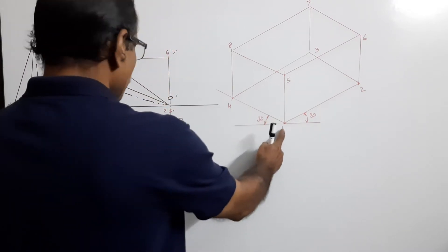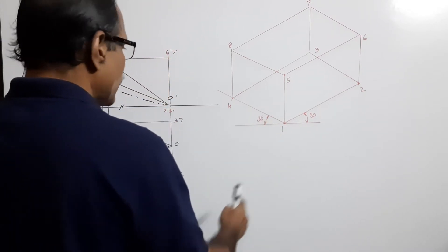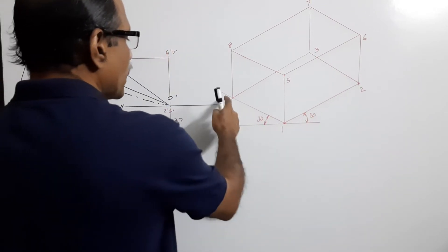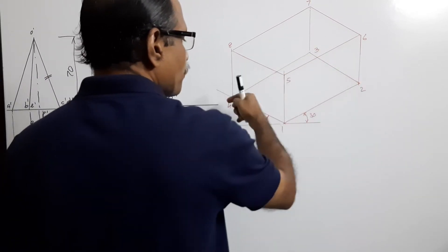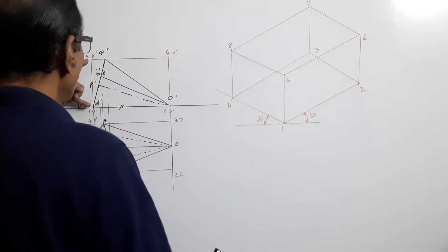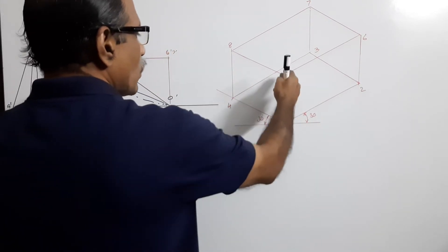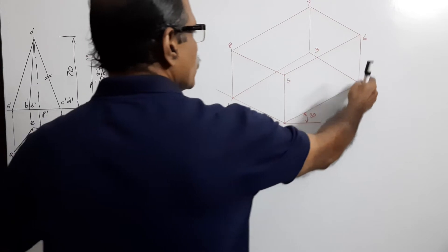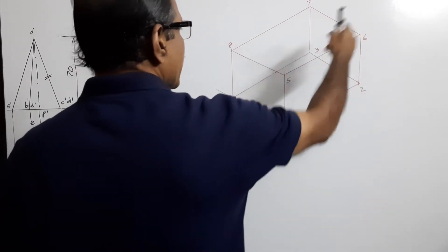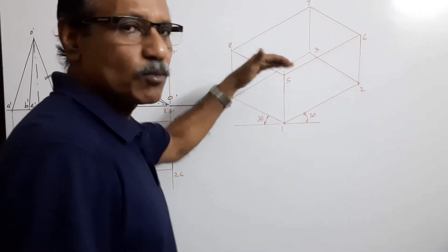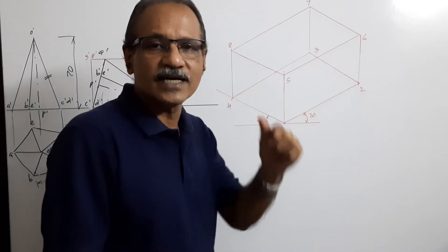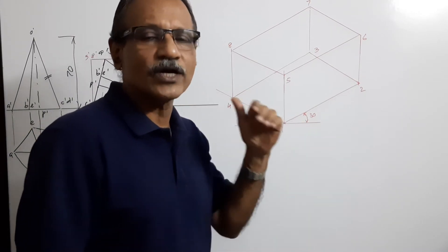Take point 1 here, take the distance 1-2 and mark it, take the distance 1-4 and mark it, and complete the parallelogram. Take the height — this side: 1-5, 2-6, 3-7, 4-8 — and connect them. You get the box. This box contains the pentagonal pyramid.